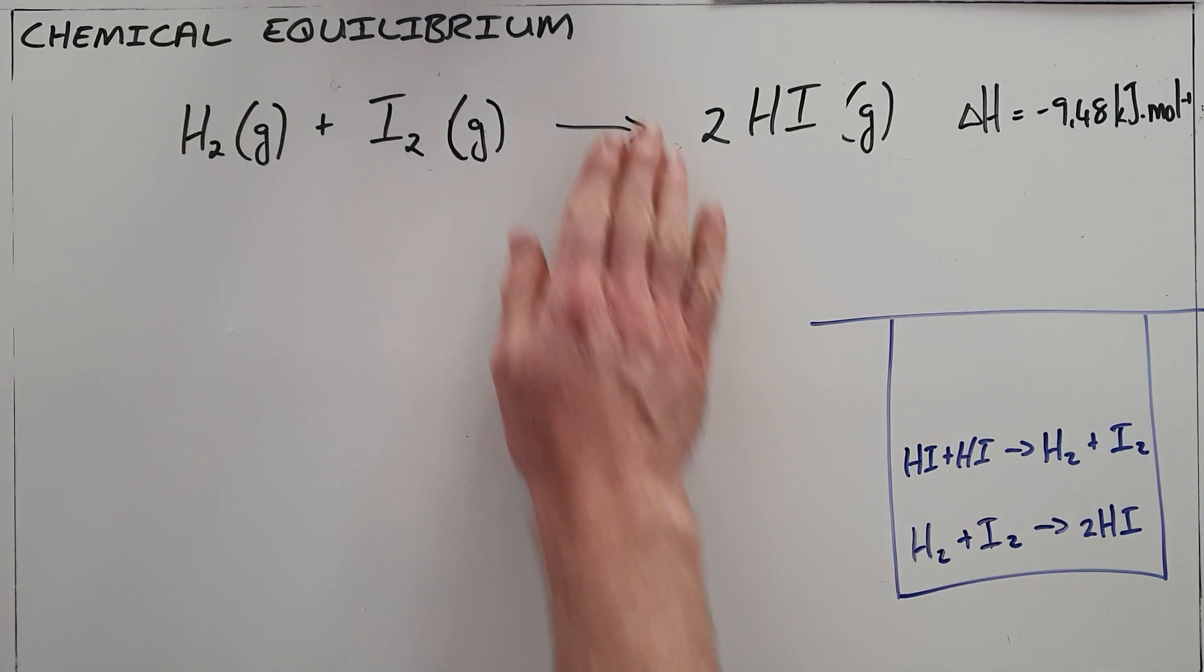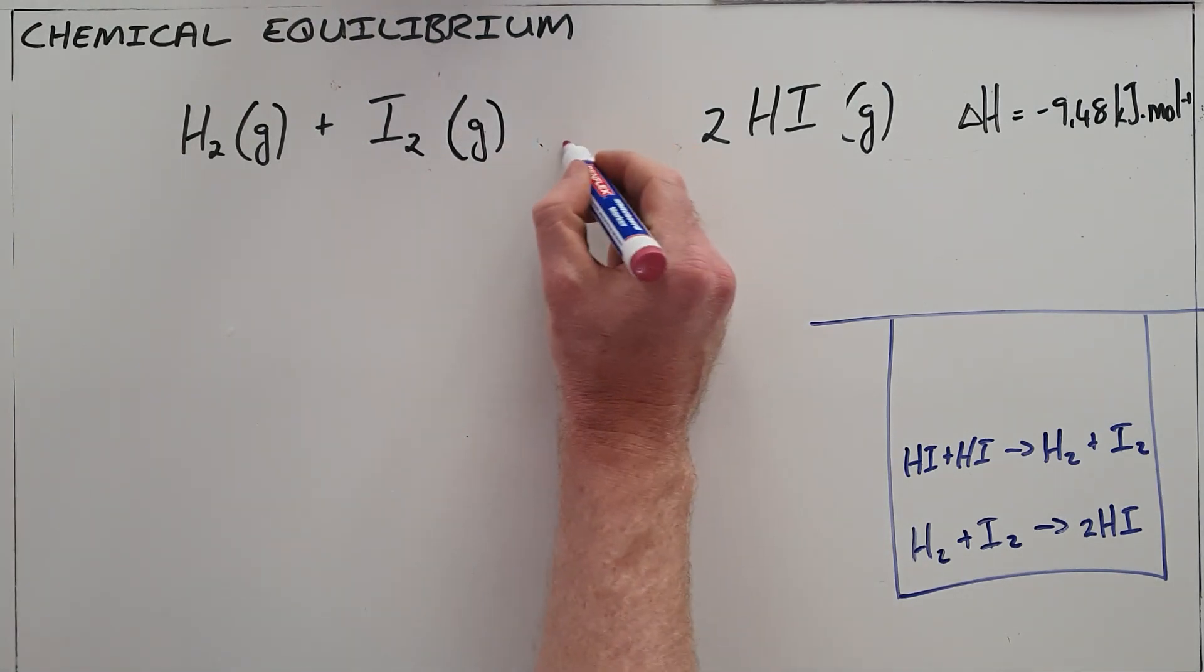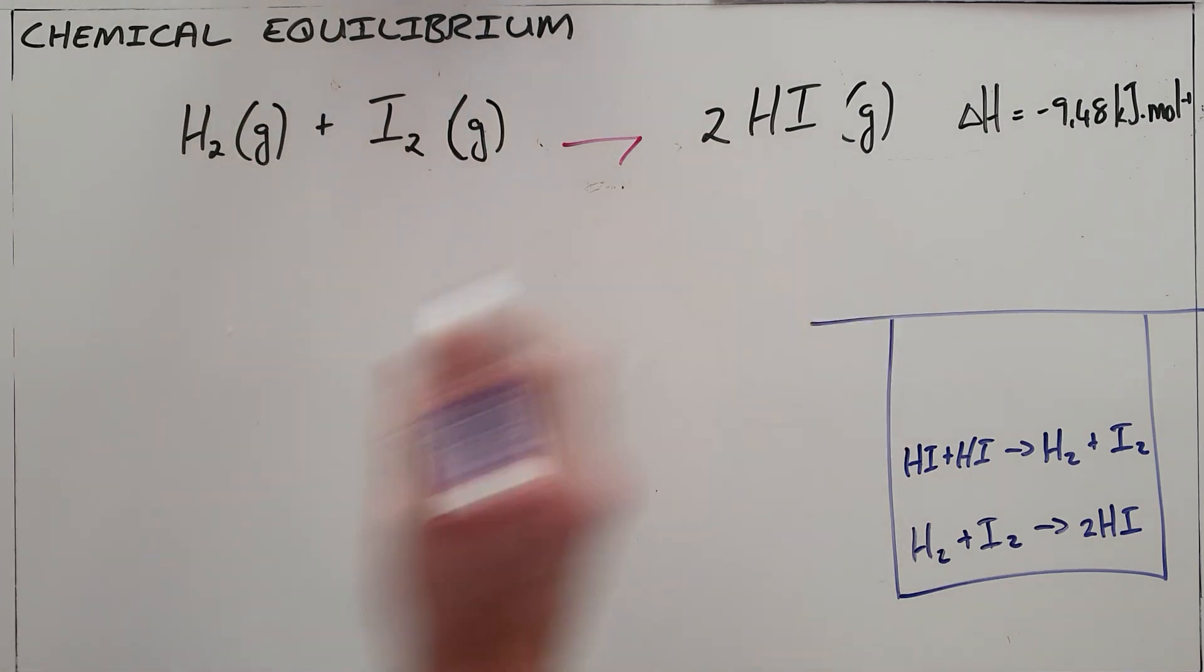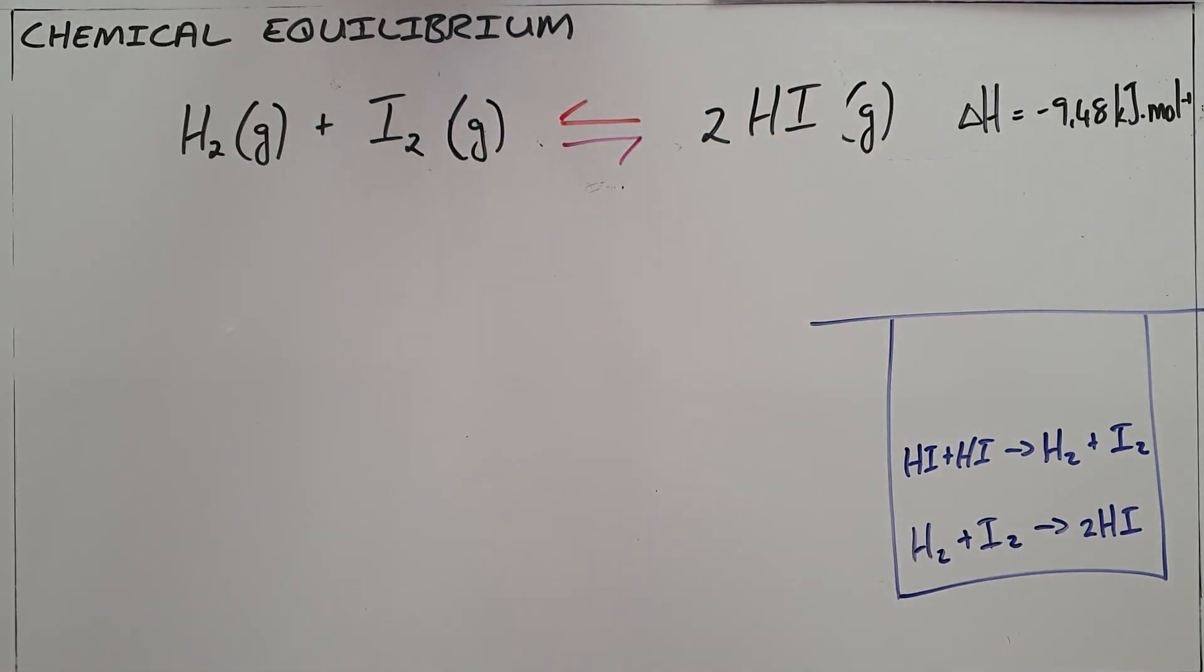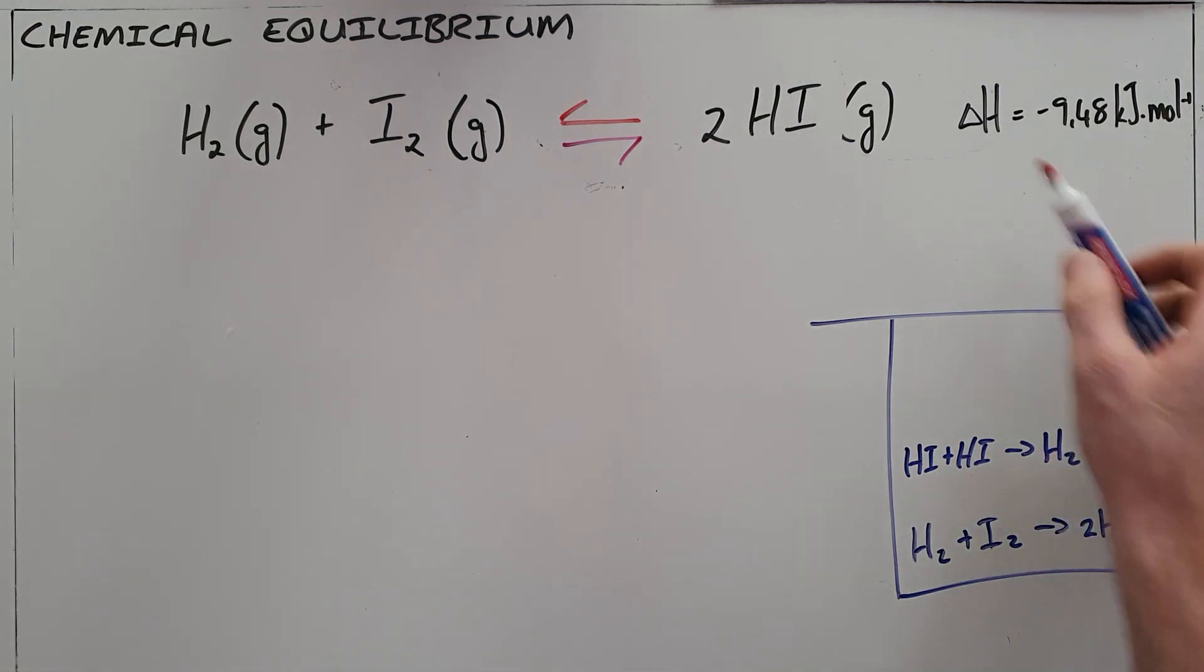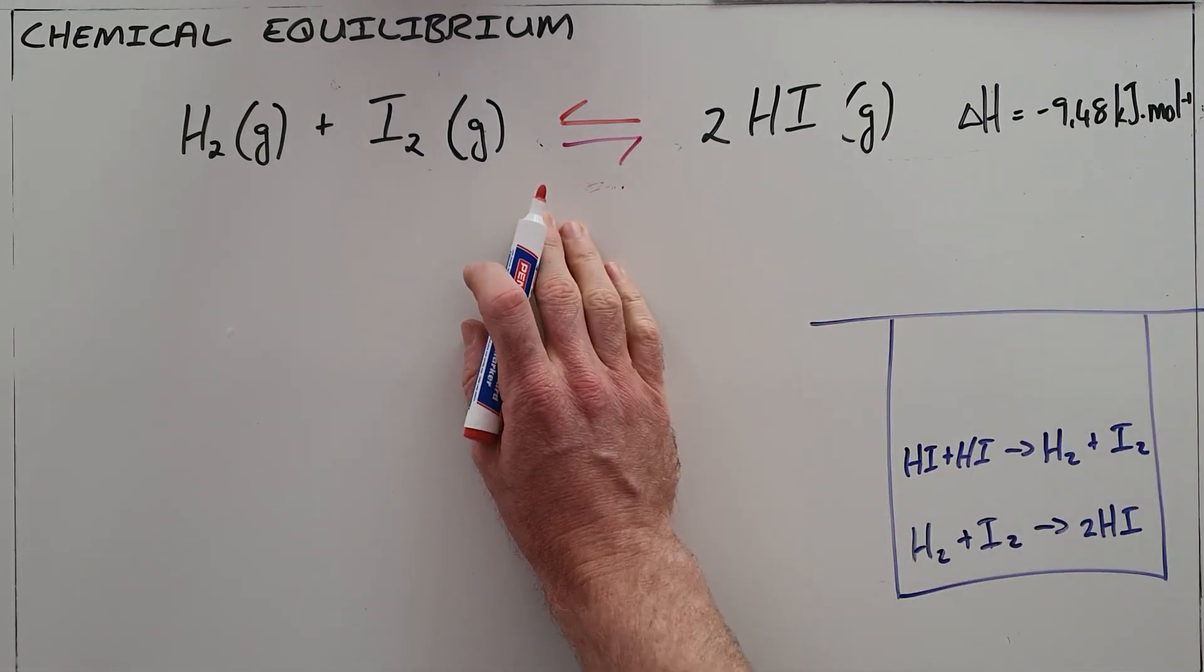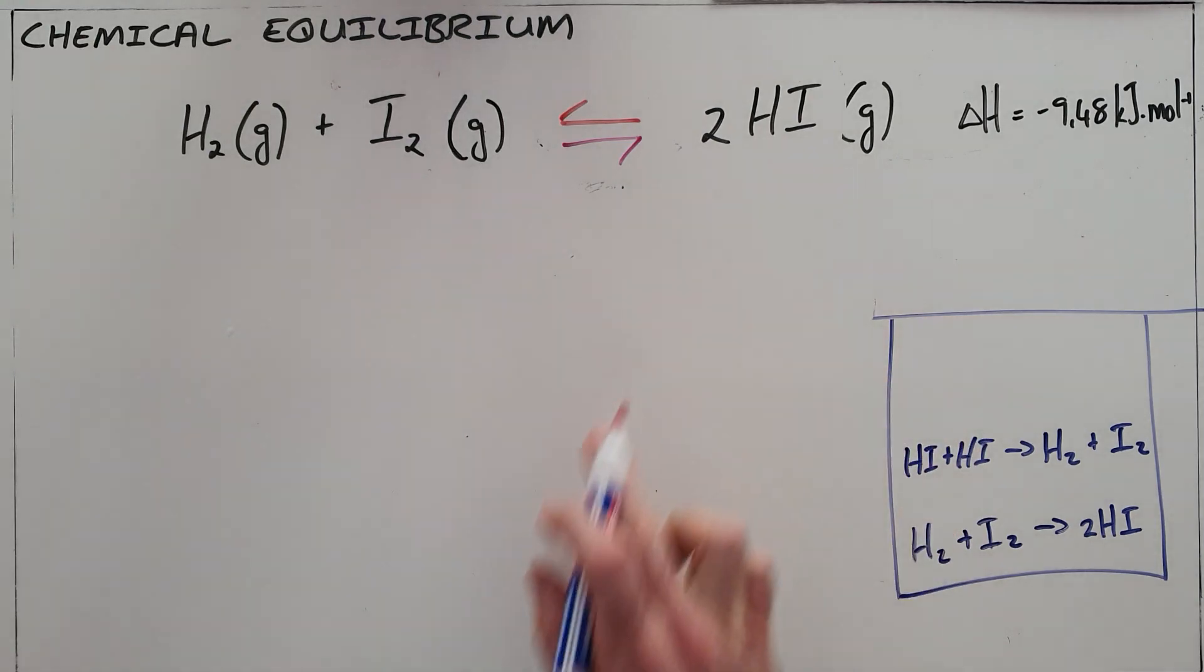Reactions like this we say are reversible because the forward reaction, in which reactants are converted into products, is able to be reversed where those products are converted into reactants once again. Obviously, if the forward reaction is exothermic, meaning it heats up the system, that must mean that the reverse reaction is endothermic, meaning the system would cool down.